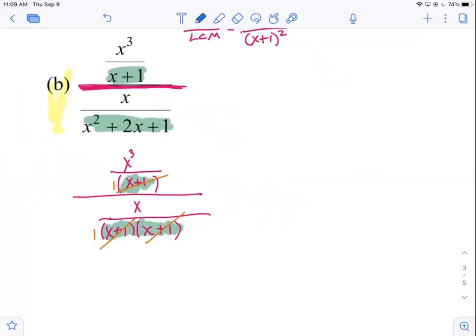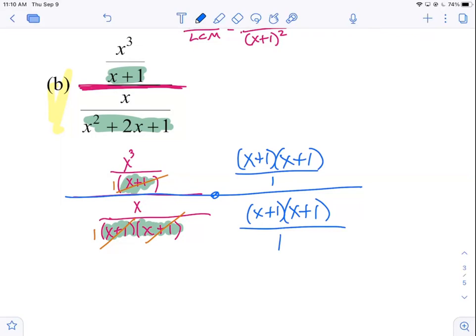So the LCM, just to review. We need at least one representative factor of each type. And then take the largest exponent on each type. I need an x plus 1 factor. This one's to the first. This one's squared. So x plus 1 squared. Good.